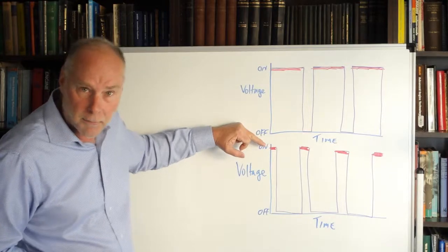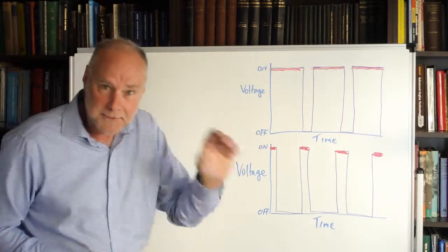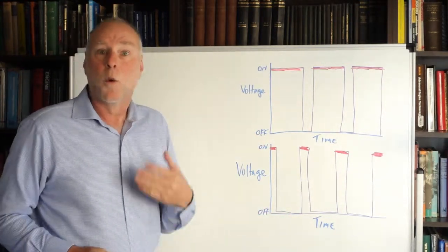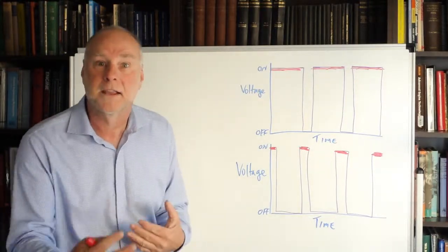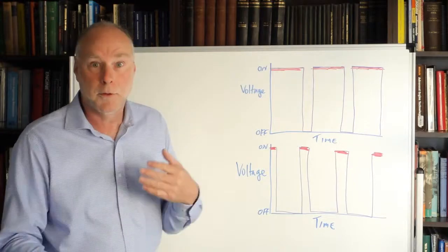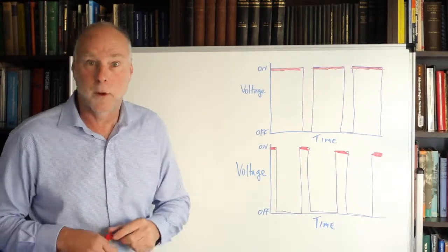By controlling the switching transistor that's feeding current to this load, we can control the duty cycle, what proportion of time the signal is on for, so we can then control the speed of the fan or the pump or the brightness of the light bulb or whatever it might be.